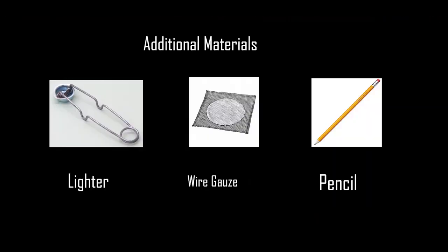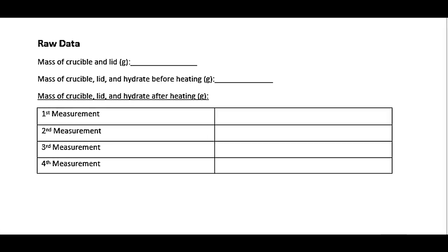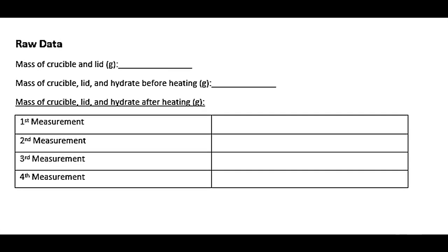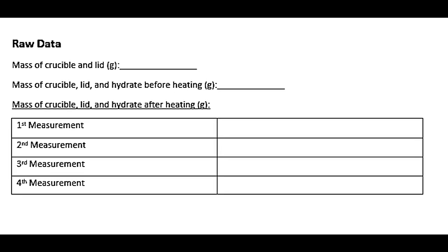Here are some additional materials Jeannie forgot to mention. The most important thing is the data table. Notice that the information you will measure and record are the mass of the crucible and its lid, the mass of the crucible, its lid, and the hydrate, and the mass of the anhydrate, which you will be measuring after heating the hydrate.